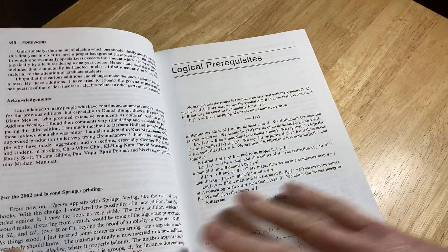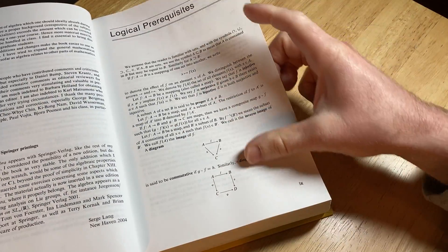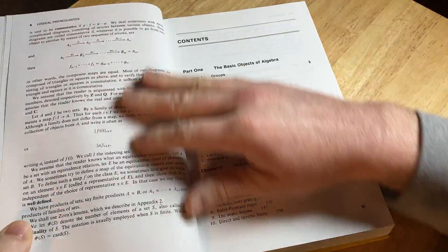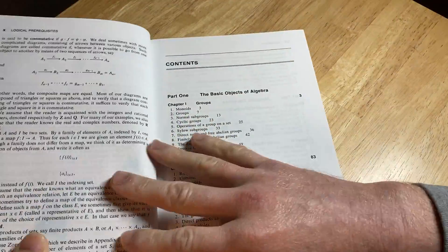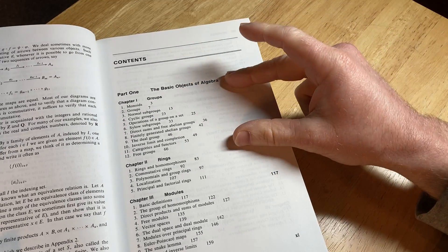What's this? Look at this. Logical prerequisites. So already you have like a diagram here with functions, and these are just the prerequisites. And then we begin, right? And look how quickly, I mean, group theory, groups.